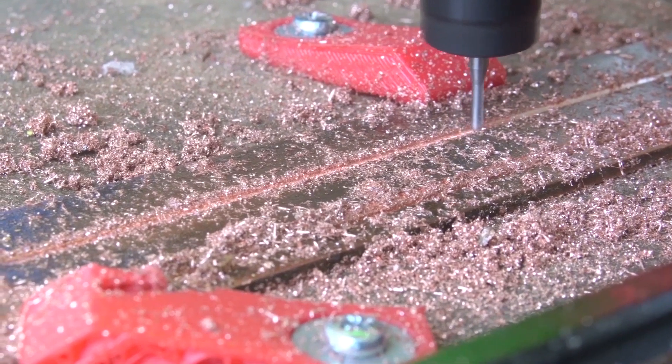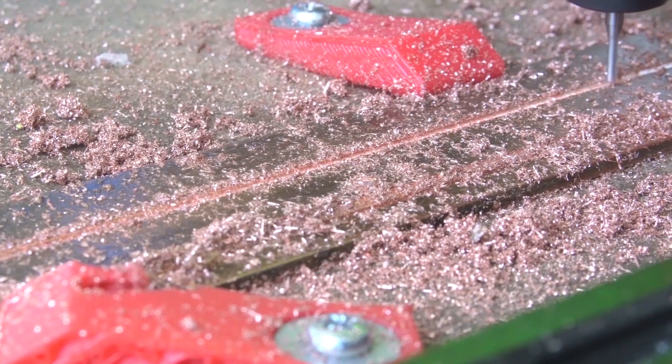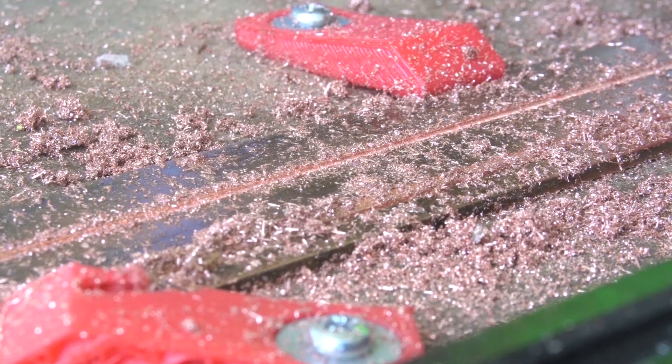Lastly, we tried cutting copper with a custom G-code. Although the spindle showed no struggle, the belt driven X axis couldn't handle it.